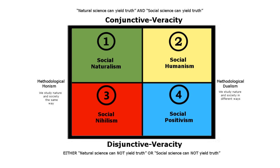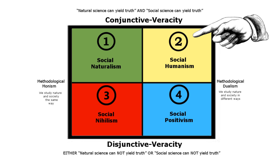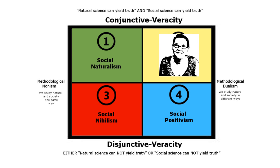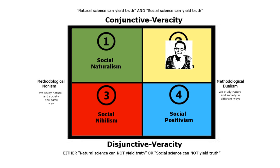The second option, social humanism, claims that the study of society is discontinuous with the study of nature, but that both approaches are equally capable of yielding truth. This is the predominant position among social scientists, such as Christy Winters, who claim that the qualitative methods of social science are distinct from the quantitative methods that it shares with the natural sciences, but that the results of social science are no less true because of this.